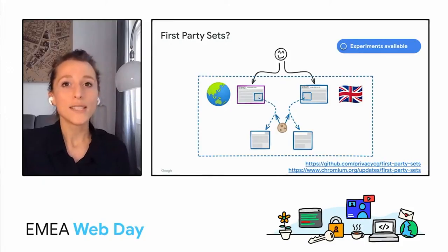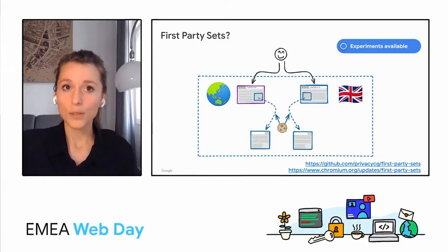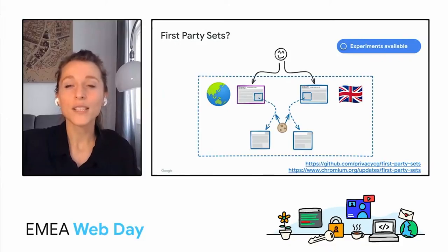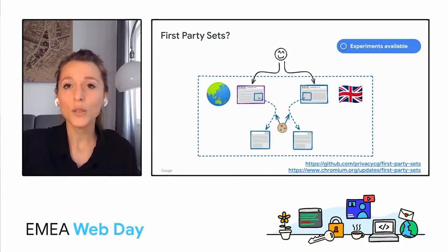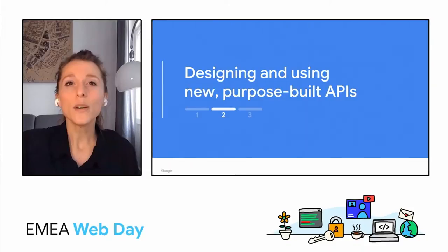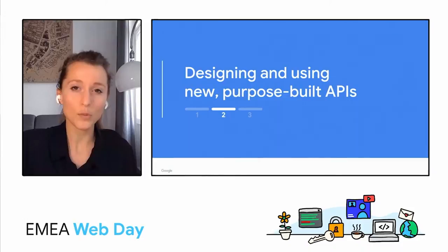First Party Sets is at an early stage, so there are still open questions. But if those questions are interesting to you, an origin trial is available. Maybe, though, this is not enough and you actually need some information transmitted across parties. If you're doing this today with third-party cookies, you need to replace them with new alternatives. This is where new purpose-built APIs come in — designed to fulfill use cases that power today's web, but in a privacy-preserving way.